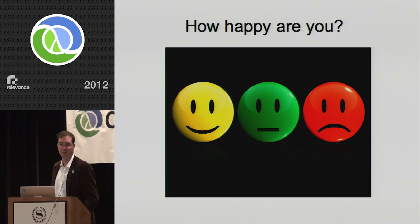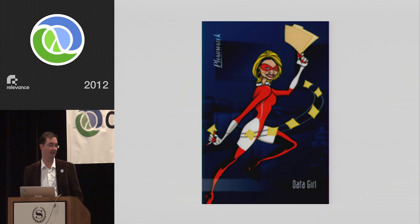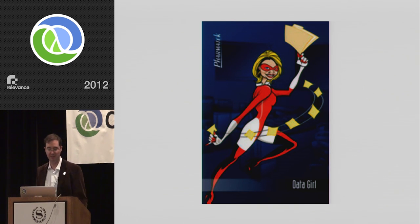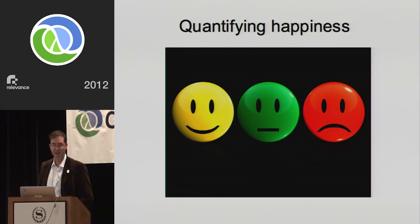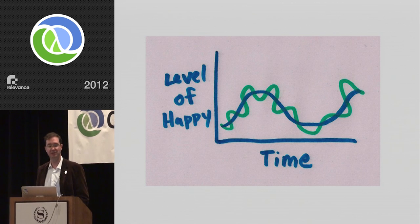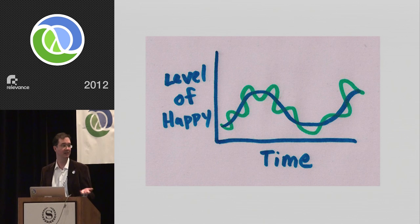That's when the alarm bells went off in my head, because my wife is a data junkie. She likes to collect data, manage data, graph it over time. What she's interested in now is quantifying happiness — tracking it over time along with what she's doing, to look for correlations and long-term trends.